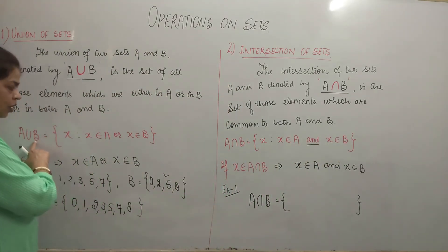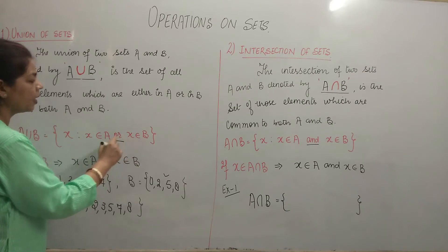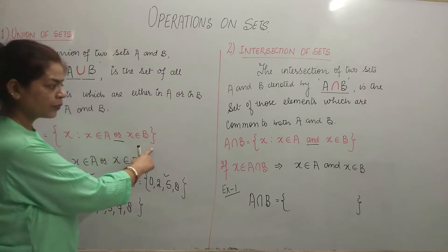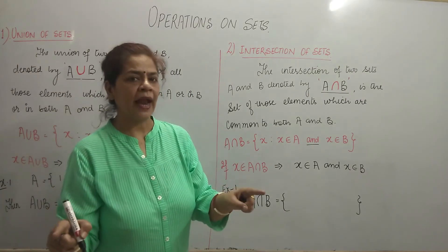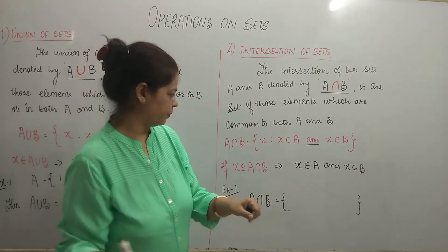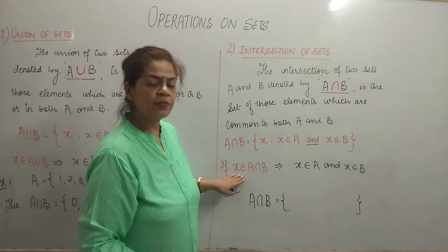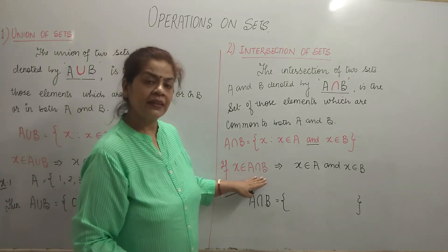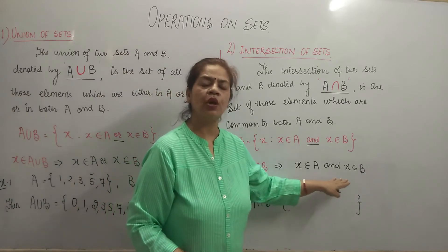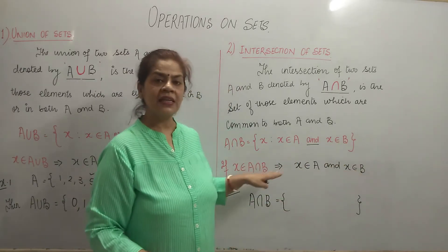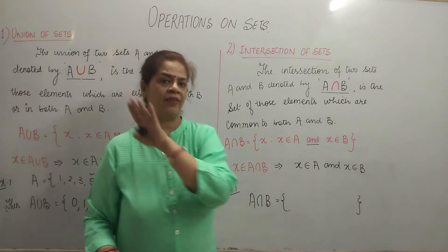Here, A union B was X such that X belongs to A or X belongs to B. Try to understand the difference between union and intersection. If any element X belongs to A intersection B, that means X belongs to A and X belongs to B — X is the collection of all those elements which both A and B have.